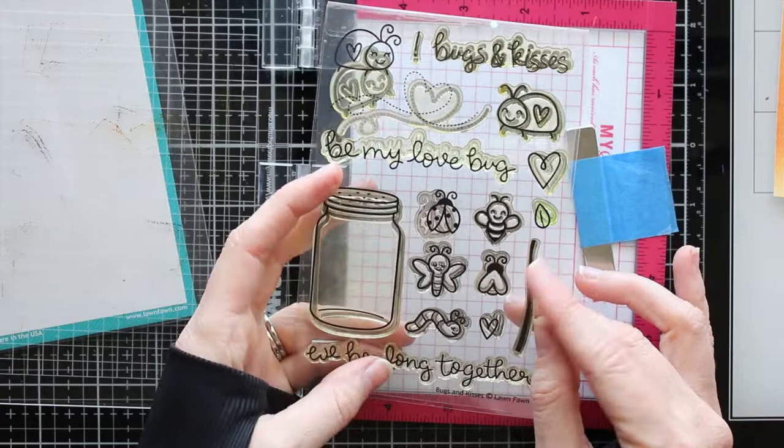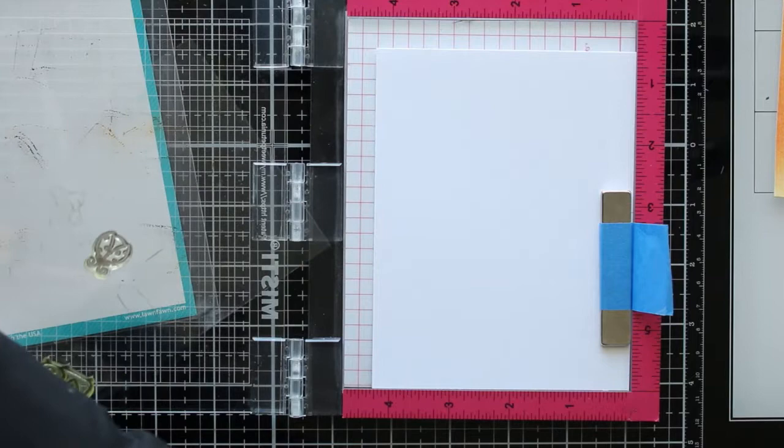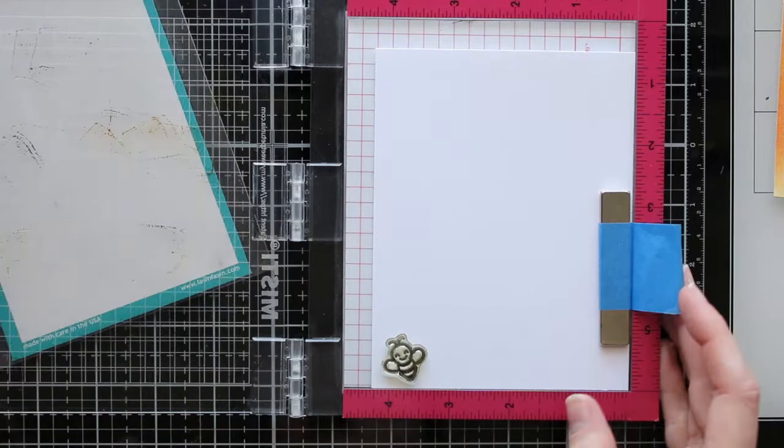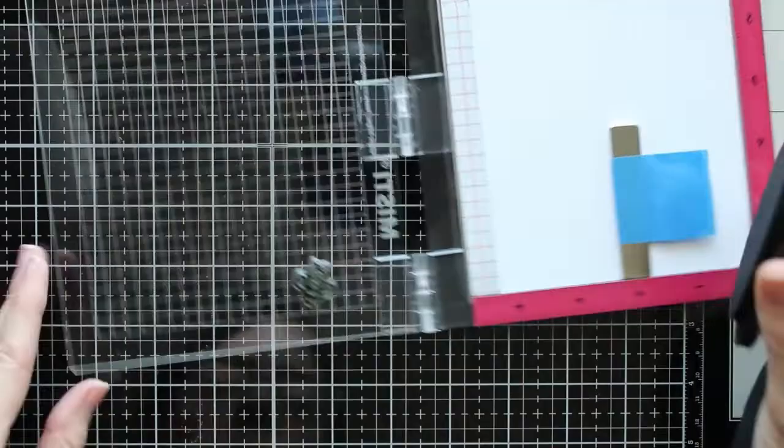I'm pulling out one of my ancient stamp sets, this one is Bugs and Kisses from Lawn Fawn. You can see a few of my stamps are yellowing a little bit. It doesn't hurt the stamp at all, they've just kind of discolored. They still stamp perfectly fine but this is the only stamp set that I had that had little cute bees in it so I had to pull this out and stamp out some of these bees because you can't make a bee card without having actual bees on there.